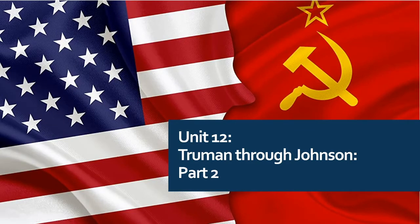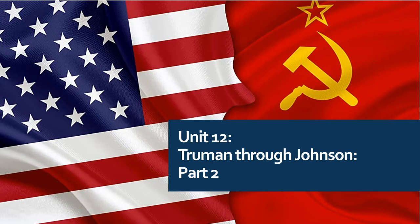U.S. History. We are doing part two of Unit 12, generally talking Truman through Johnson — so we're talking mid-1940s through the end of the 1960s. Last time we talked about the spread of communism, the Marshall Plan, and different aspects mainly of the Cold War.